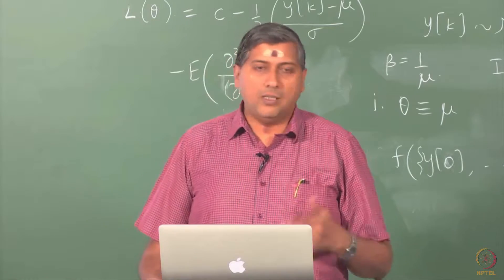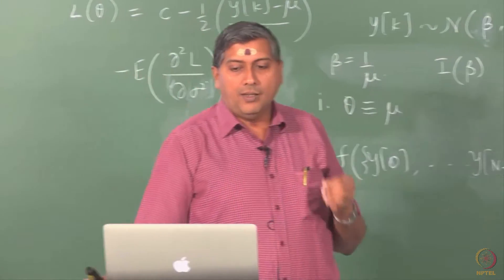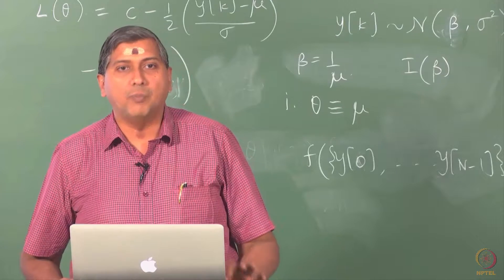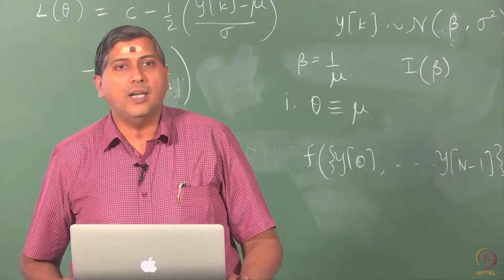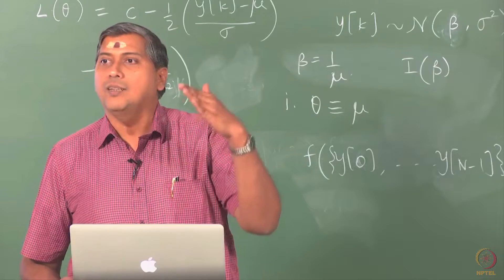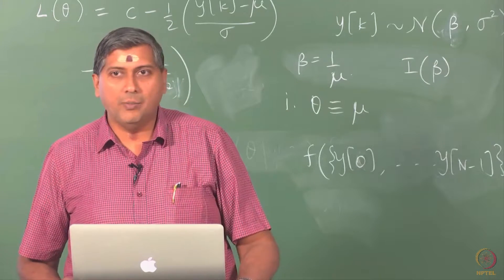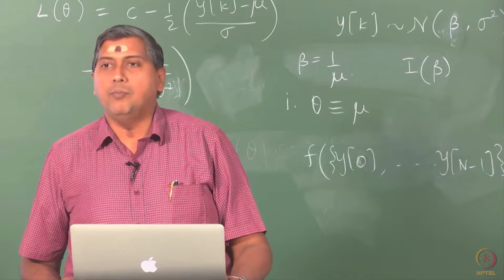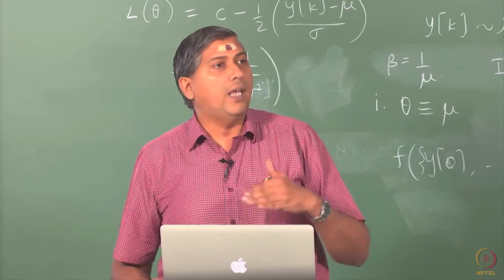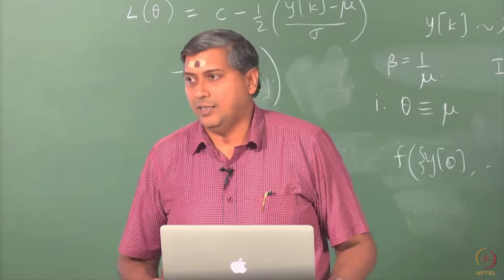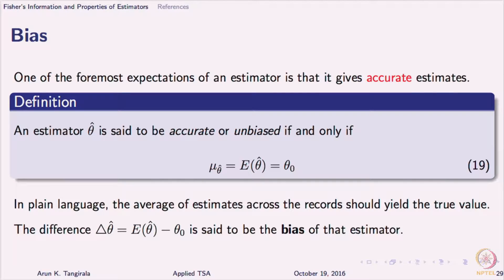And as I have remarked two lectures ago, one of the first qualifiers of an estimator is its bias, and bias looks at the averaging property of the estimator. Remember, your θ̂ is a random variable, and bias is simply the difference between the average of θ̂ across the data space, across the outcome space, and the difference between that and the true value.